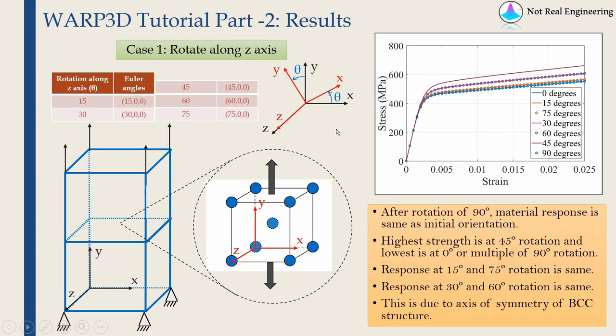And these are the results. In first case, I am rotating the crystal along Z-axis. This red coordinate system, I am rotating along this Z-axis. So the angle between red X-axis and black X-axis will be theta. And similarly, angle between red Y-axis and black Y-axis will be theta. You can imagine this as tipping it over along this edge. Now if we do that and we obtain stress-strain curve for different angles of this theta, what we observe is, after rotation of 90 degrees, the material response is same as initial orientation.